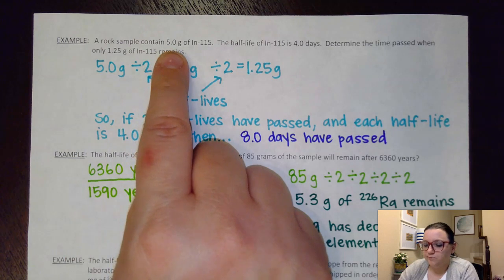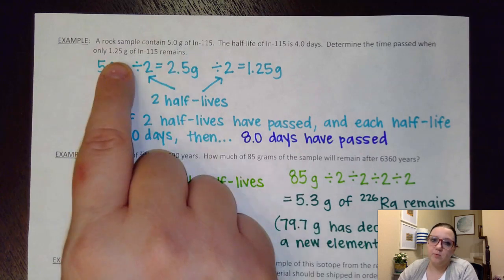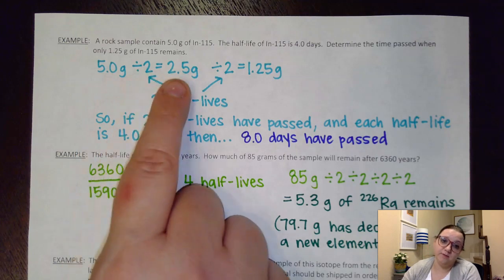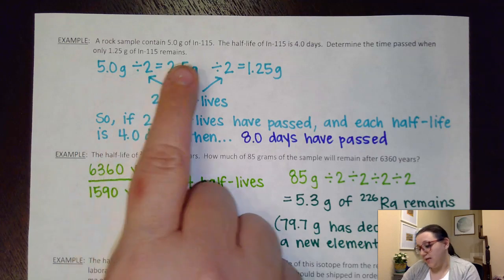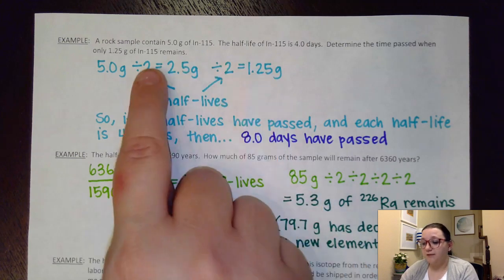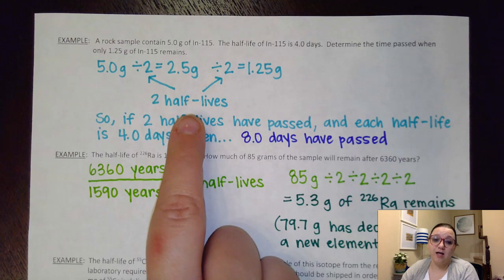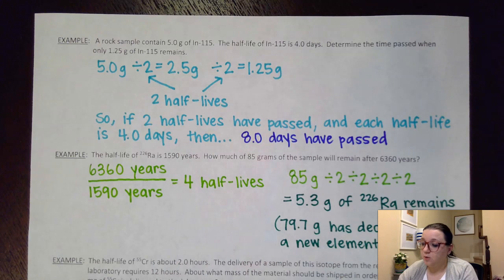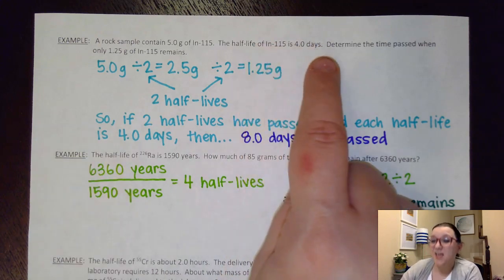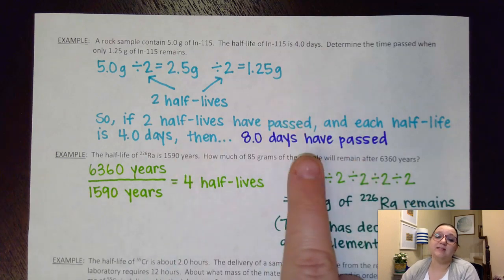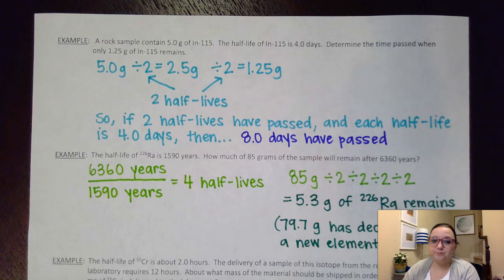I started off with 5 grams here. I want to get down to only 1.25 grams. So I want to figure out how many times did I have to half this. 5 grams divided by 2 gets me 2.5. If I half that again, that would get me down to 1.25. So that means if I halved it twice, I went through two half-lives. So if two half-lives have passed, but they told me back up here that the half-lifetime is 4 days, 4 days times those two half-lives would have been 8 days that have passed in total.